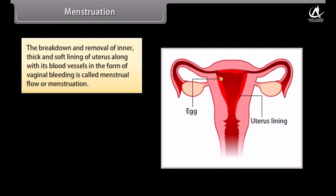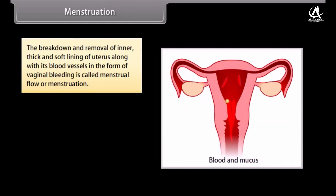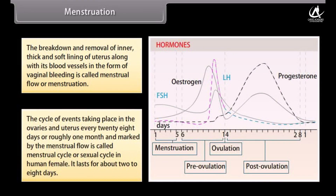The breakdown and removal of the inner thick and soft lining of the uterus, along with its blood vessels, in the form of vaginal bleeding is called menstrual flow or menstruation. The cycle of events taking place in the ovaries and uterus every 28 days, marked by the menstrual flow, is called the menstrual cycle or sexual cycle. In human females it lasts about two to eight days.